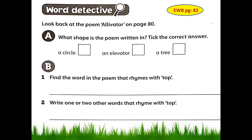Now turn your English workbooks to page number 82. Word Detective — I love being the word detective, do you? Let's start. Look back at the poem Elevator on page 80. What shape is the poem written in? Quickly check page 80. Is it a circle? An elevator? A tree? It is an elevator, because it is taking you up.